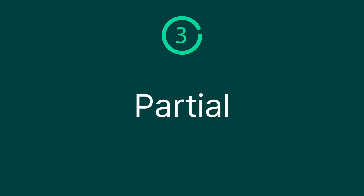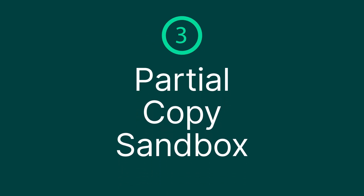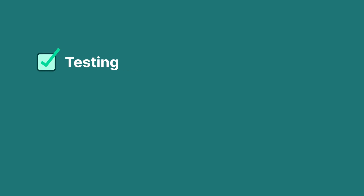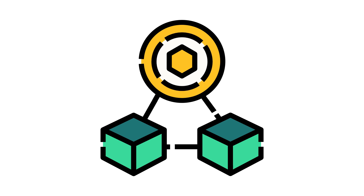Sandbox number three is the partial copy sandbox. This one is perfect for testing and development tasks that require a sample of your organization's data. This environment includes your metadata and a subset of your data, which can be defined using a sandbox template. The refresh interval for a partial copy sandbox is every five days.